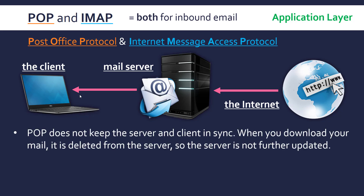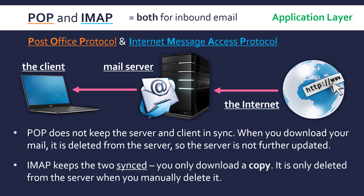POP does not keep the server and client in sync — that's a very good phrase to use. So when you download the mail, when you make this connection to the mail server running the Post Office Protocol, it's deleted as soon as you get your email. There's no permanent connection between the mail server and the client; the only connection is when you're actually going to download your mail. Whereas IMAP keeps the two synced — when you get your email, you only download a copy of it, and the only way it gets deleted from the server is when you actually delete it from your client.